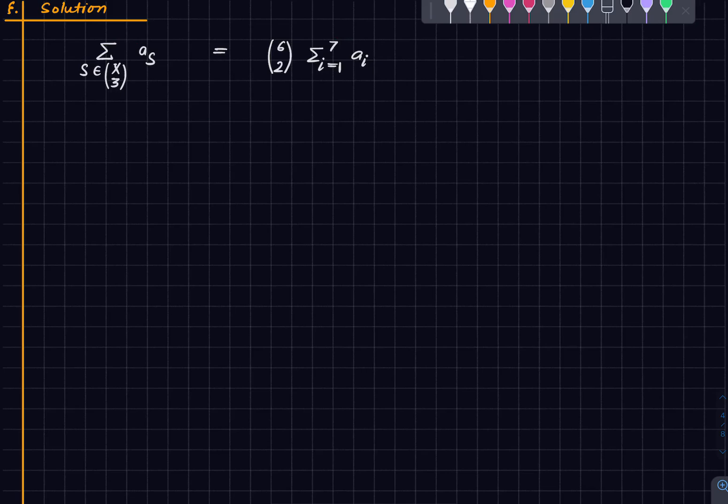So suppose we ask how many times do we see a_1 appear on the left hand side. So it's the same as asking how many subsets of size 3 of x are there which feature 1. Out of the seven elements one has already been chosen. So out of the remaining six we can choose any two and hence we see 6 choose 2. So that's the reason for the equality here.